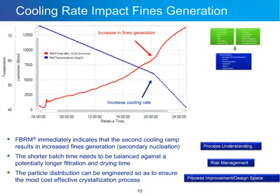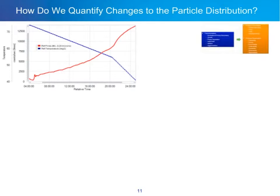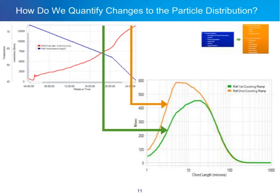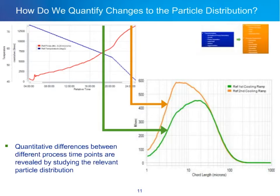In covering these three learnings, we've addressed process understanding, risk management — knowing we need to balance cooling rate against filtration time — and process improvement and design space. To link this information to the downstream process, we can take distributions from the trend at key points: just at the end of the first cooling ramp and at the end of the second. There is a clear difference in the chord length distribution measured by FBRM at these two points, with significantly more fines generated after the second cooling ramp.